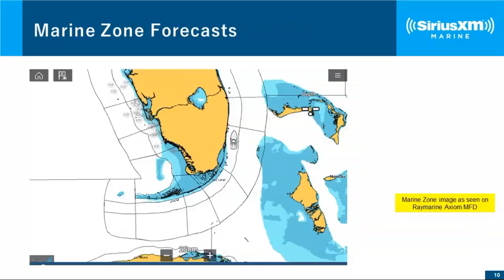Marine zones is a not as well-known but very useful feature. We've all listened to VHF marine zone forecasts — very difficult to hear, garbled, and continuing from one zone to the next. This feature removes that necessity by outlining all the marine zones on your chart. Little black lines indicate the various zones.